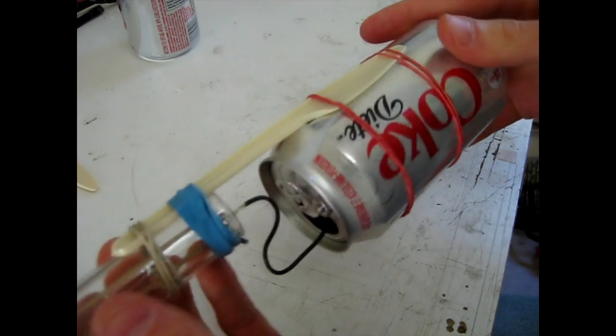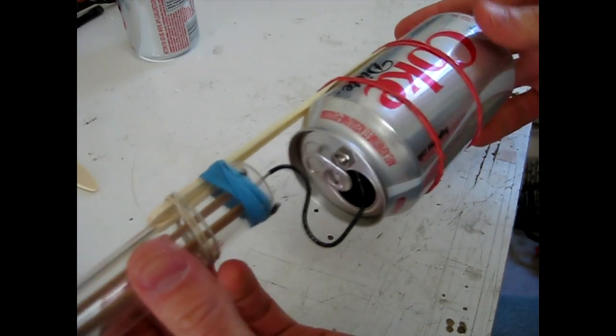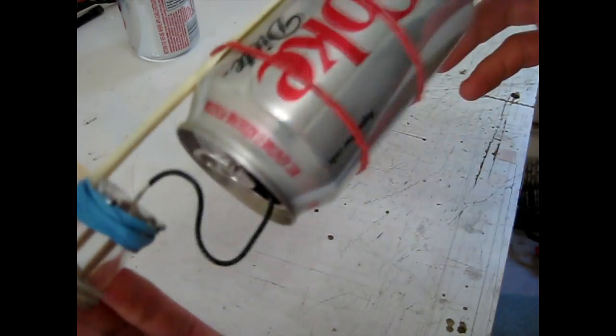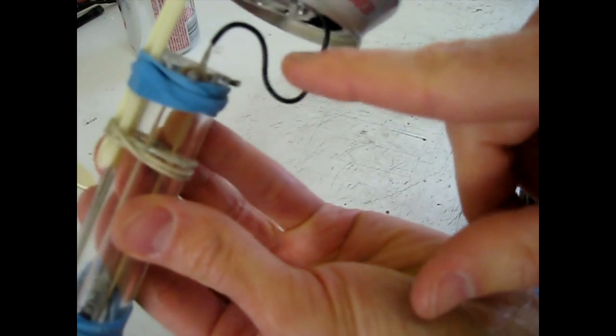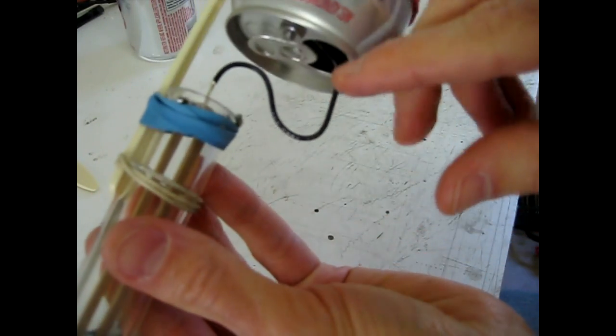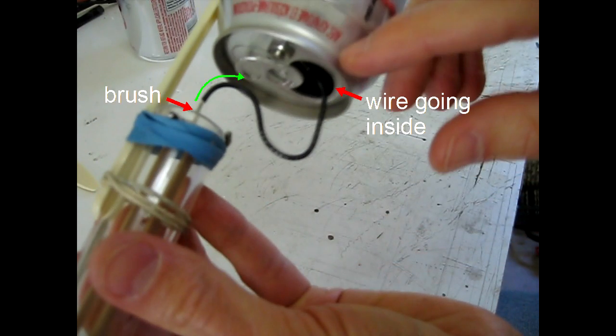Now you'll notice that in my Van de Graaff Generator, I didn't stick the top section inside the dome or can like you usually see done. Instead, I just took the wire from the brush at that end and connected it inside the can. The charge that gets picked up by that brush goes along the wire and happily goes into the inside of the can where the surface is neutral.